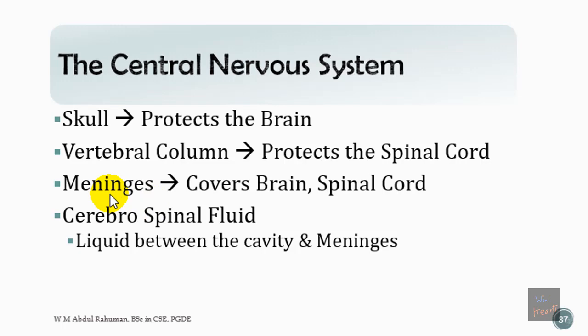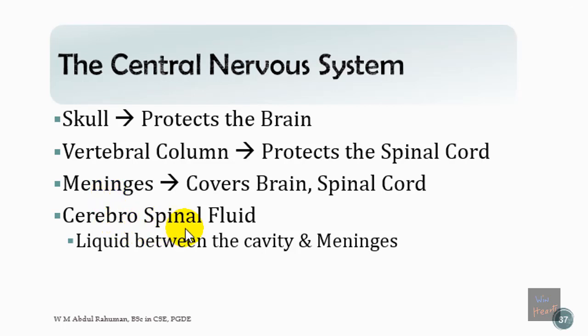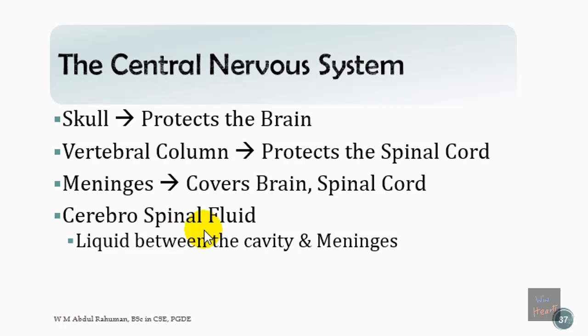There is a thin tissue-like layer covering the brain and spinal cord called the meninges, which can diffuse substances. On top of the meninges is a fluid that fills within the skull called cerebrospinal fluid, or CSF. Our brain actually rests within this fluid — floating in a very thin layer of liquid. The CSF is found within the cavity of the skull and also within the spaces of the vertebral column.